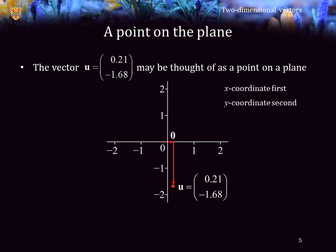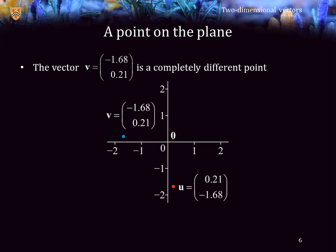However, as the second entry is negative, we are moving down from the origin. You will note that this vector v equals (-1.68, 0.21) is a very different point indeed. This represents the number that tells us first to go to the left 1.68, and then 0.21 up. For a vector, it is ordered information, and if you switch the order, it represents a completely different object.